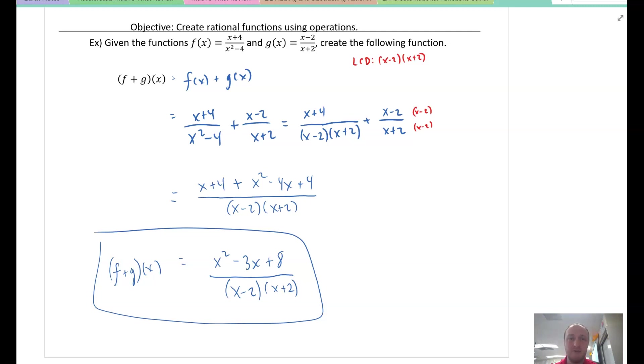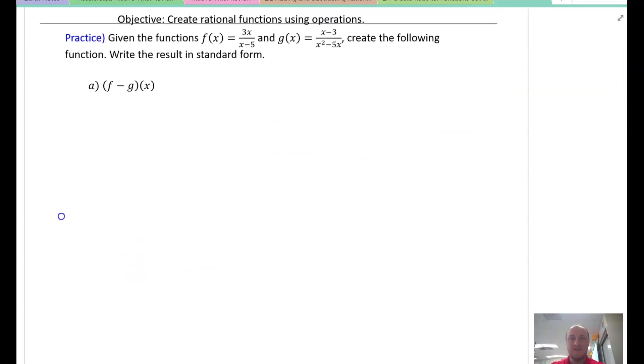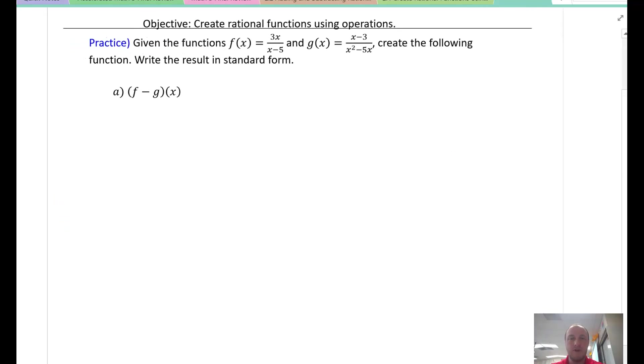We have done our objective, creating rational functions using operations. That was addition and subtraction. I'm going to post the practice problem right here. If you have room, if not, do it on a whiteboard. Please pause the video right now, and then I'm going to click to the next slide so you can see the answer.